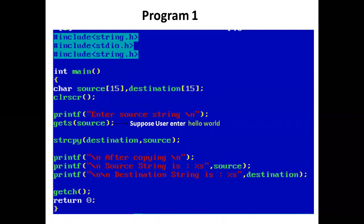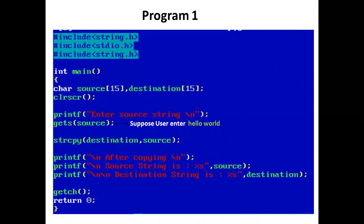A printf statement prints 'enter source string' and using gets(), the user enters the first string. Suppose the user enters 'hello world'. The gets() function reads a line and stops when a newline character is read. Now we have the strcpy function — strcpy with destination comma source in parentheses.